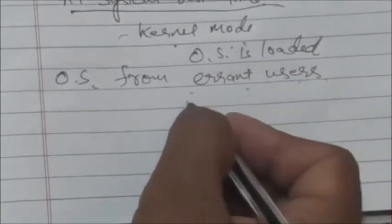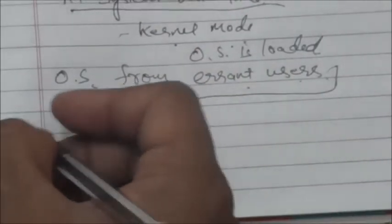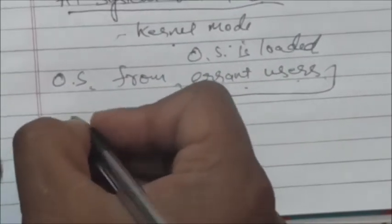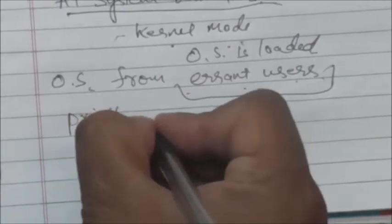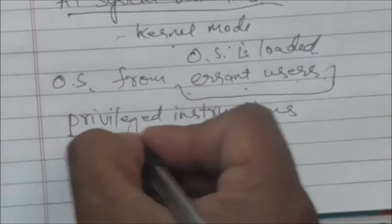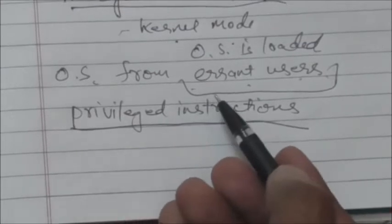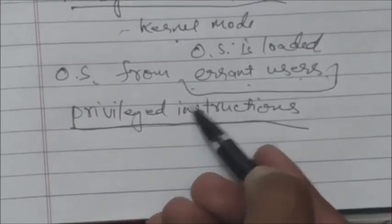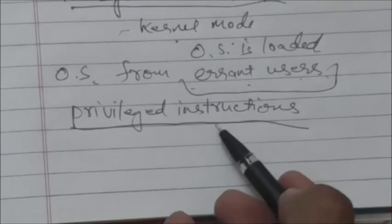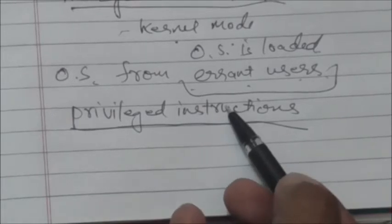To protect the operating system from errant users and to protect errant users from each other, some machine instructions which can cause harm are designated as privileged instructions. Hardware allows these privileged instructions to be executed only in kernel mode. If an attempt is made to execute a privileged instruction in user mode, the hardware will not execute the instruction.